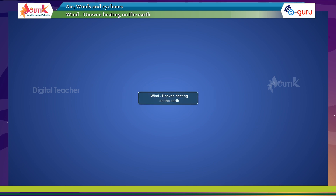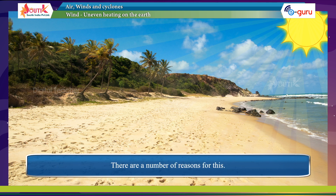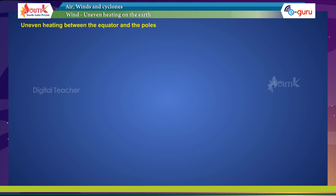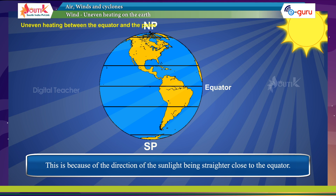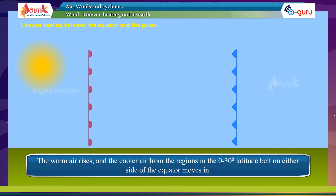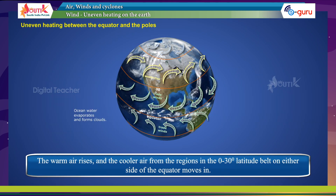Wind is caused by uneven heating on the earth. Let us try to find how uneven heating takes place on the surface of the earth. There are a number of reasons for this. One is uneven heating between the equator and the poles. The region close to the equator gets more heat from the sun because the direction of sunlight is straighter close to the equator. The warm air rises and the cooler air from regions in the 0 to 30 degree latitude belt on either side of the equator moves in.